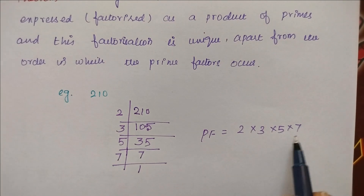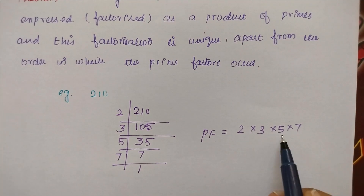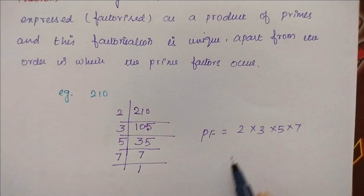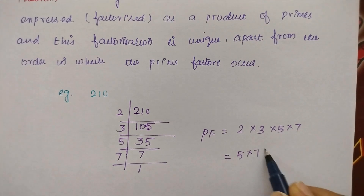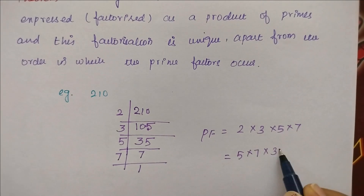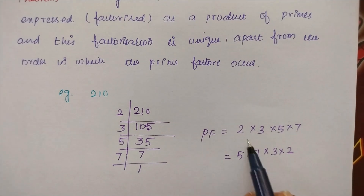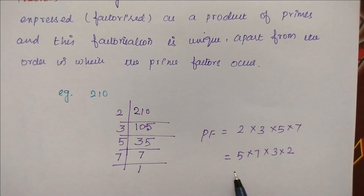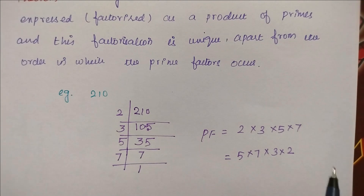But we can change the order in which we write them. Instead of 2, 3, 5, 7 — we don't have to write it only that way. We can write 5, 7, 3, 2 — we can write in any order. But when we look at the factors, it will always be the same.